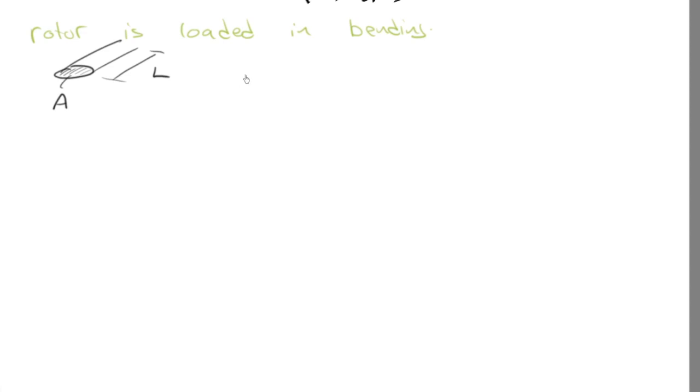It's loaded in bending and it's a helicopter, so our main objective would be to minimize mass. Mass equals the area times the length times the density. But of course we're going to have constraints, and the one I want to look at here would be a constraint on the maximum amount of deflection.